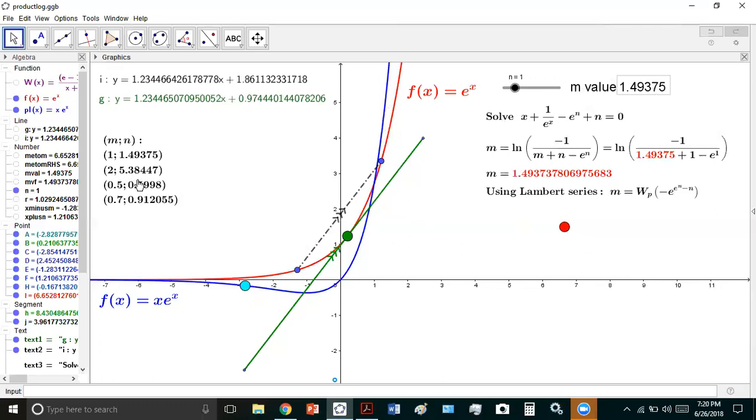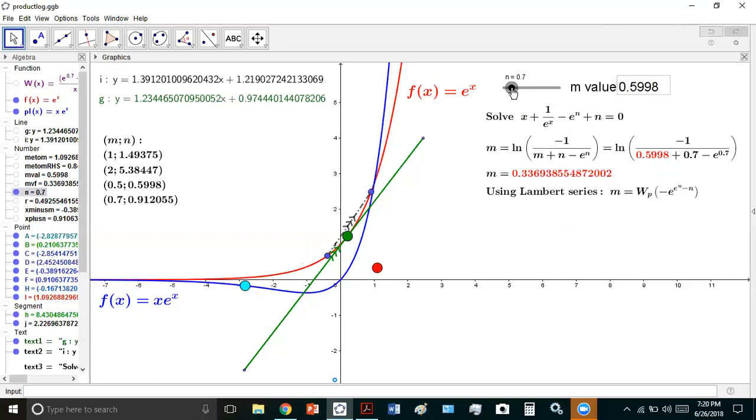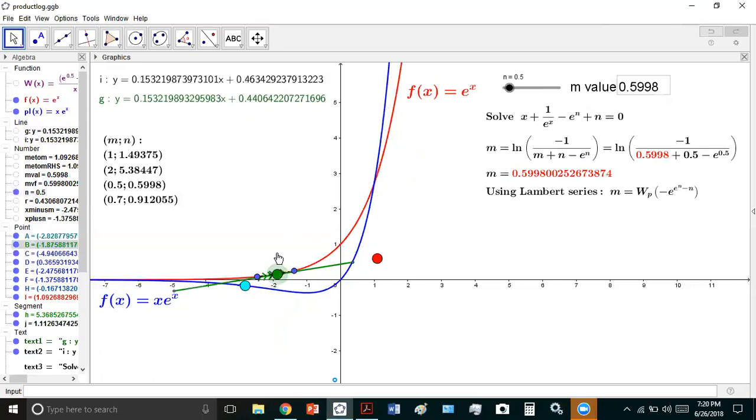It doesn't matter which of these pairs, and there are many that we choose. Let's take another one, for example. Let's take n is equal to 0.5, just to reinforce this. 0.5 must have an m value of 0.5998. Okay. And n must be 0.5. All right. So, and again, you'll notice that the gradients are the same, and it doesn't matter where we move it. They'll always be the same. Even at 1, they're the same.